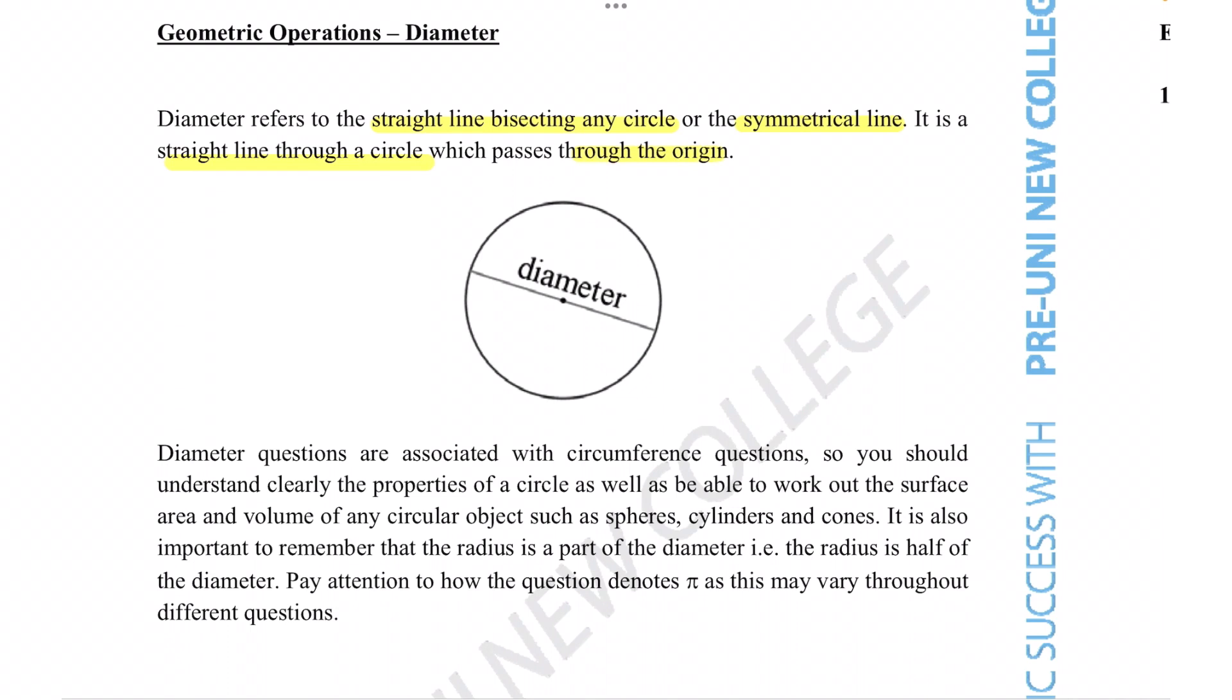Diameter questions are associated with circumference questions, so you should understand clearly the properties of a circle as well as be able to work out the surface area and volume of any circular objects such as spheres, cylinders and cones. It is also important to remember that the radius is part of the diameter, i.e. the radius is half of the diameter. Pay attention to how the question denotes pi as this may vary throughout different questions.